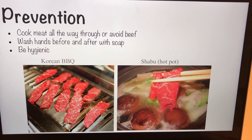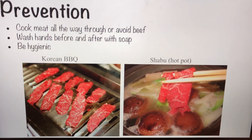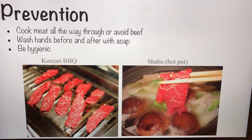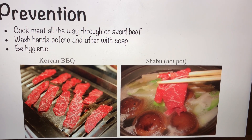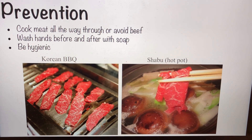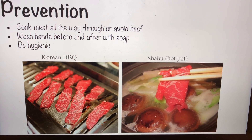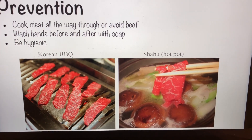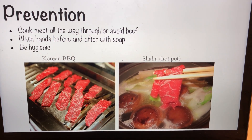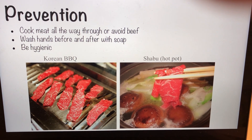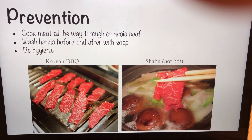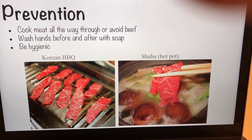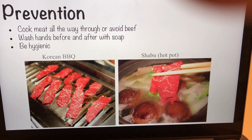Prevention: a simple way to prevent getting this beef tapeworm is just to cook your meat all the way through, or avoid beef in general. If contaminated water is a concern, make sure to wash your hands before and after with soap and just be hygienic. For example, if you go to a Korean barbecue or hot pot where you cook your own meat, make sure you cook it thoroughly and that it's not red, so you don't get the beef tapeworm.